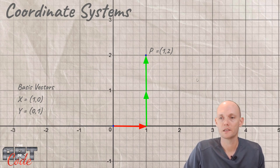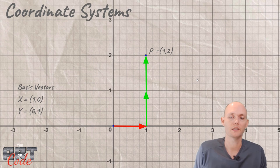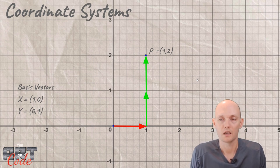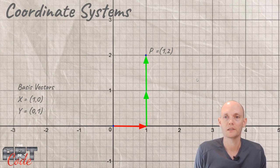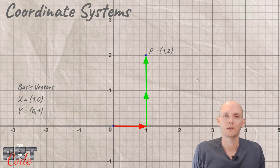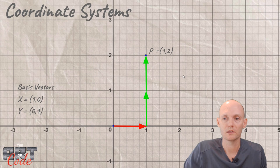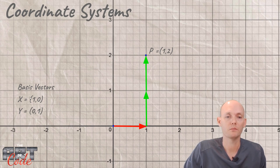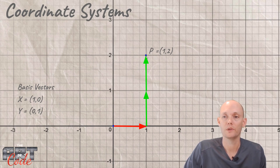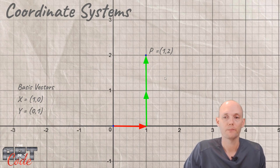It might seem obvious that this is the case, but it's only obvious because our basis vectors are the standard basis vectors. If we change these basis vectors, we can move that point anywhere we want. So let's play around with that a little bit.